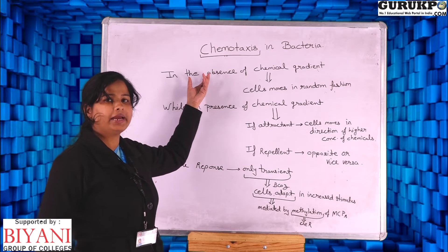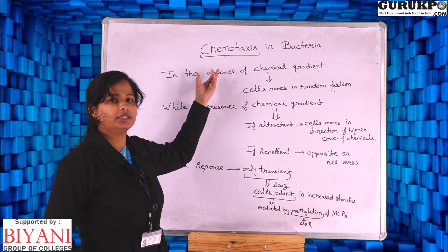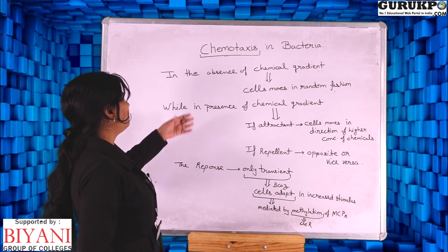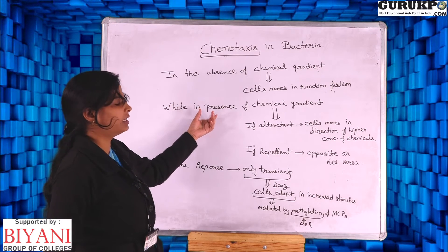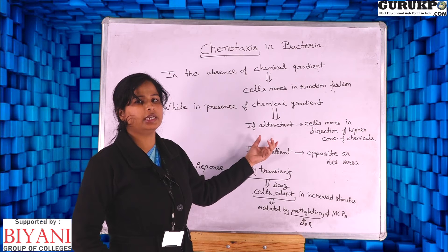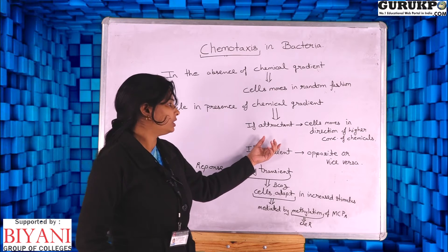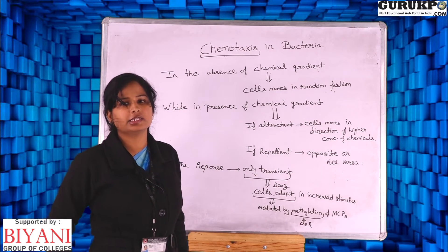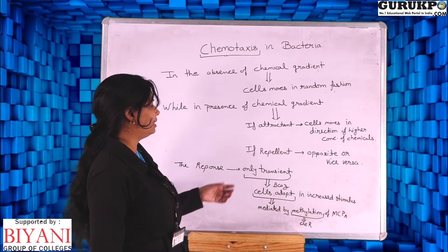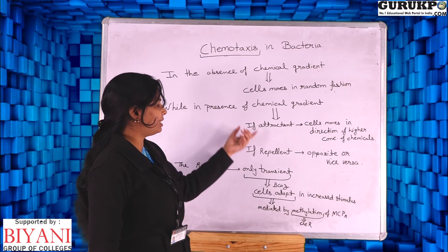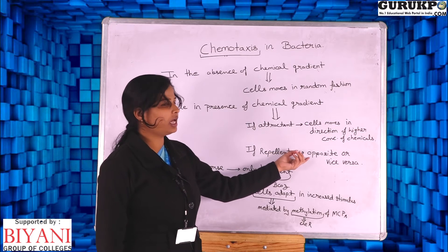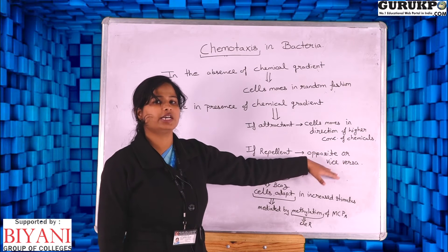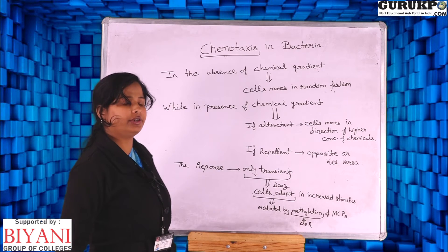How does a bacterial cell work in the presence of a chemical gradient? In the presence of a chemical gradient, if the chemical is an attractant in nature, the cell moves in the direction of high concentration of that chemical. If the chemical is a repellent, the cell will move in the opposite direction — the inverse of the attractant response.